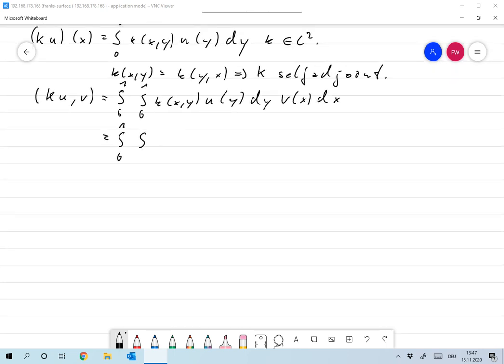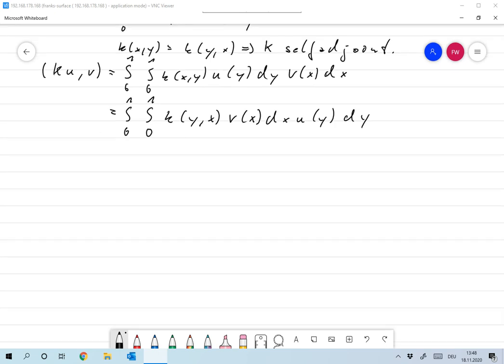And this is the same as the integral of 0 to 1, integral 0 to 1, k(x,y) is the same as k(y,x), v(x) dx, u(y) dy, and now this is the same as the scalar product of u and k applied to v.